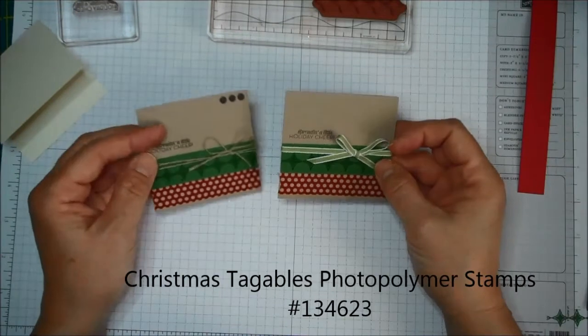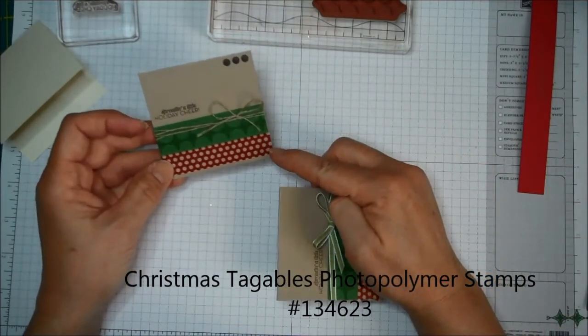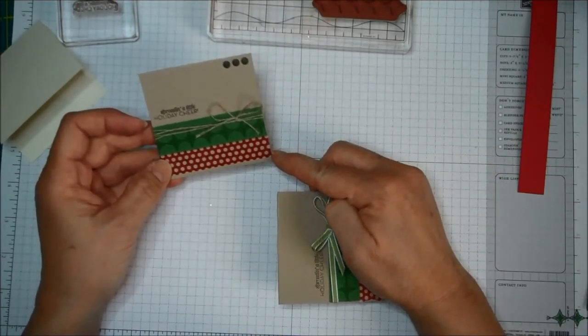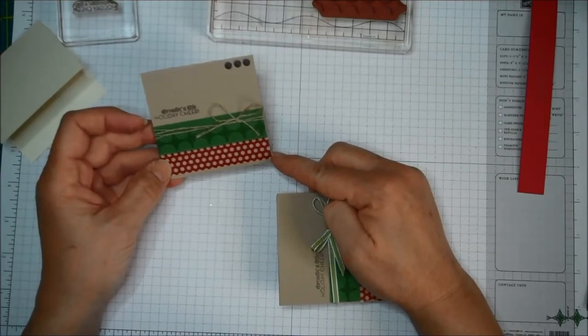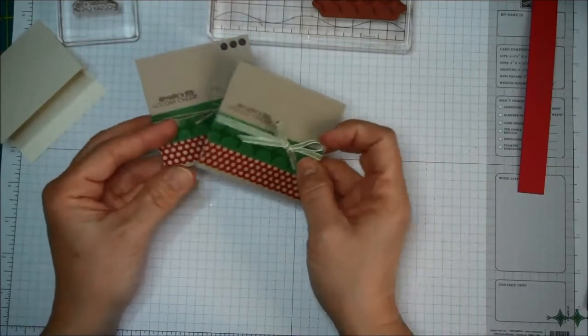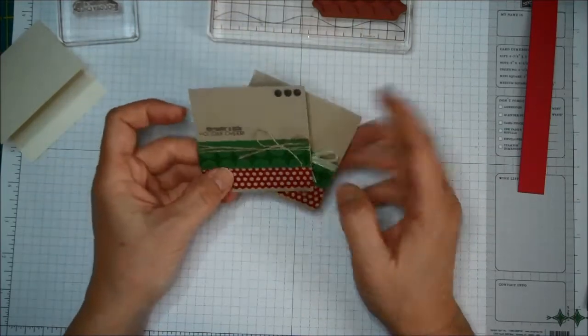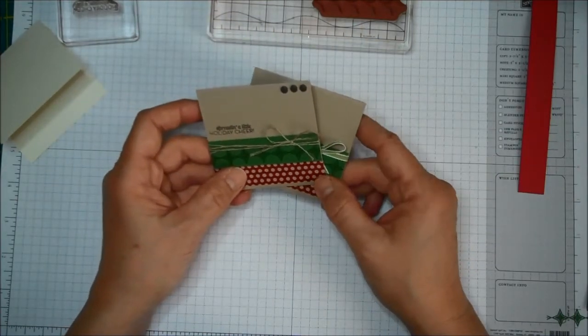For these two cards I used Crumb Cake, Garden Green, I used the Cherry Cobbler, Season of Style Washi Tape, Linen Thread on this one, and I used Old Olive Ribbon on this one, and I used some Early Espresso Candy Dots.